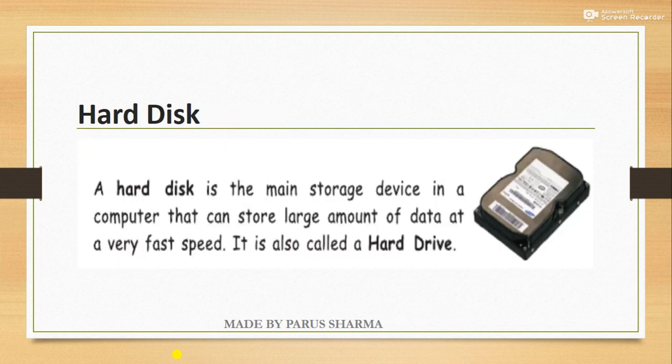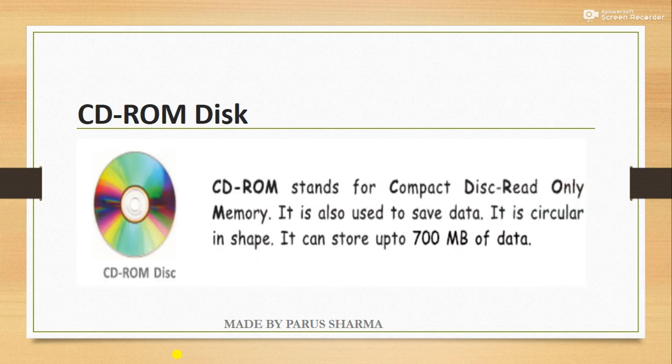The hard disk is a storage device used to store large amounts of data at very high speed. It is also called a hard drive and is present inside the computer. The CD-ROM disk is a compact disk that can store data up to 700 MB.